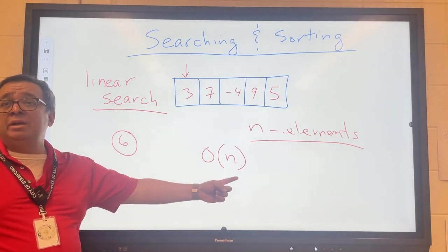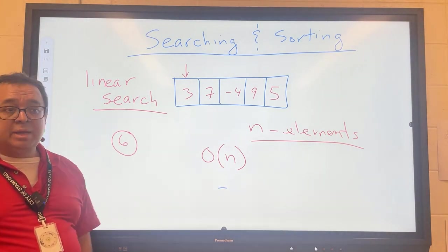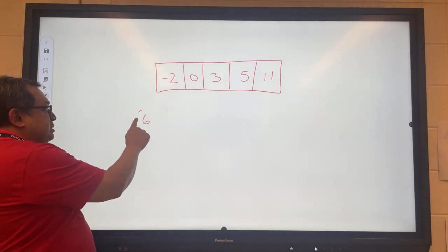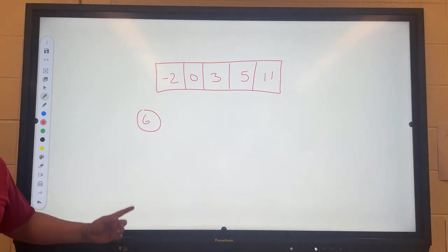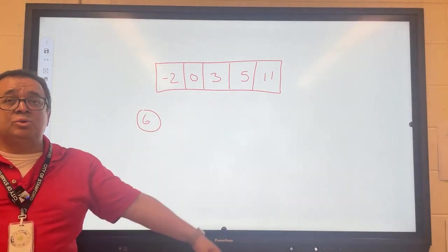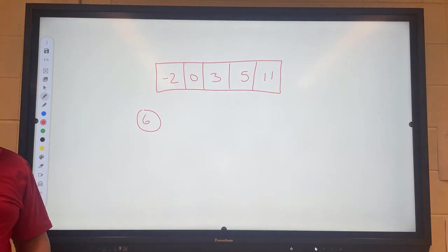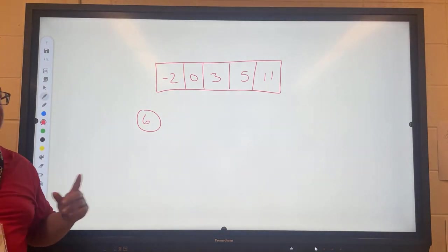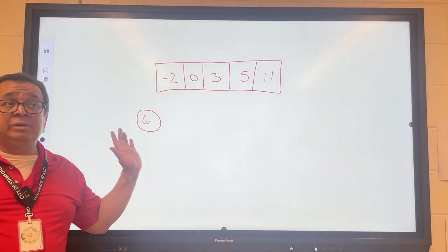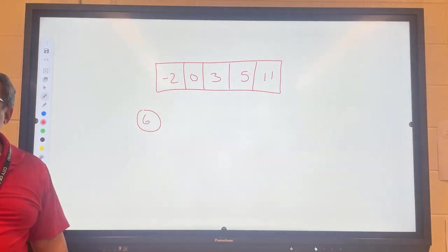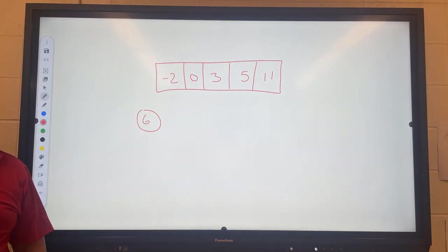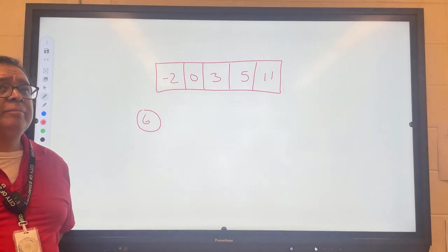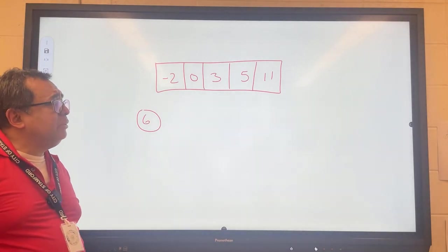We're going to look at another scenario now. Once again we're looking for the number six, and this time you'll notice that the array has been sorted ahead of time. We want to know how long will it take this time for us to find out if the six is there or not. Could we use the same linear search algorithm that we had before? Discuss with your partner if there's a faster way.